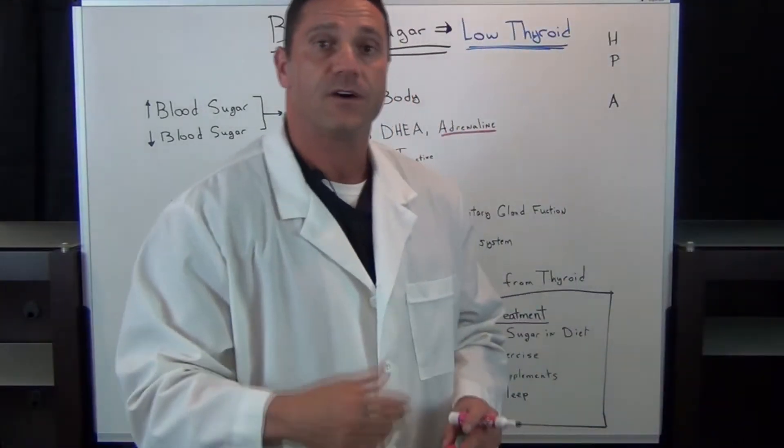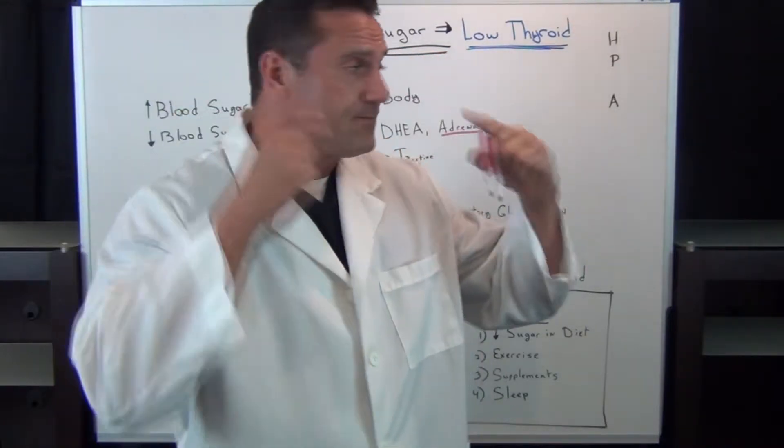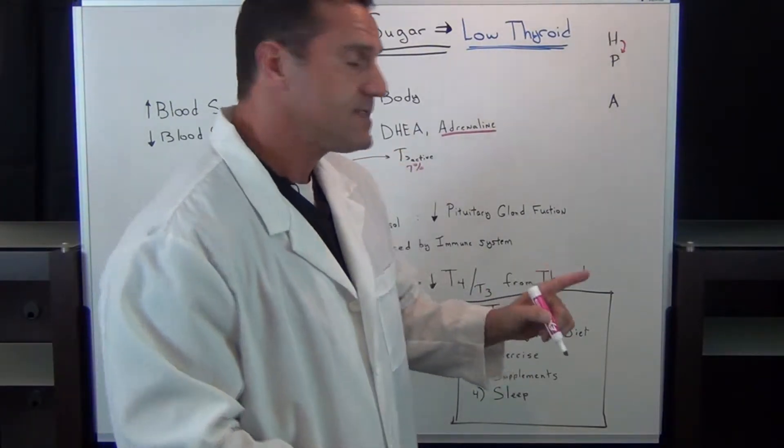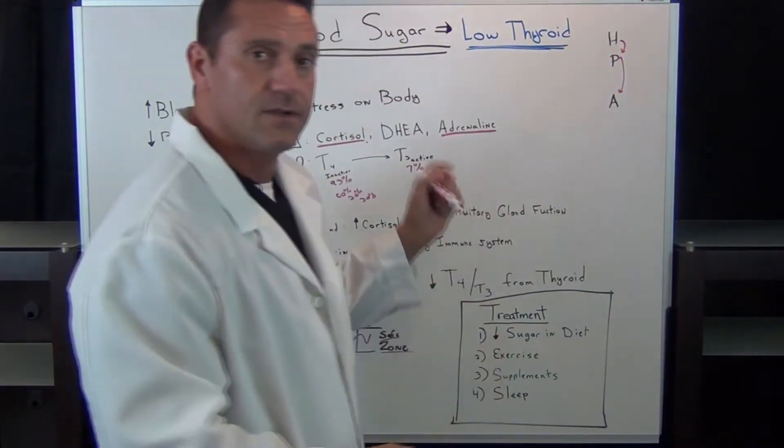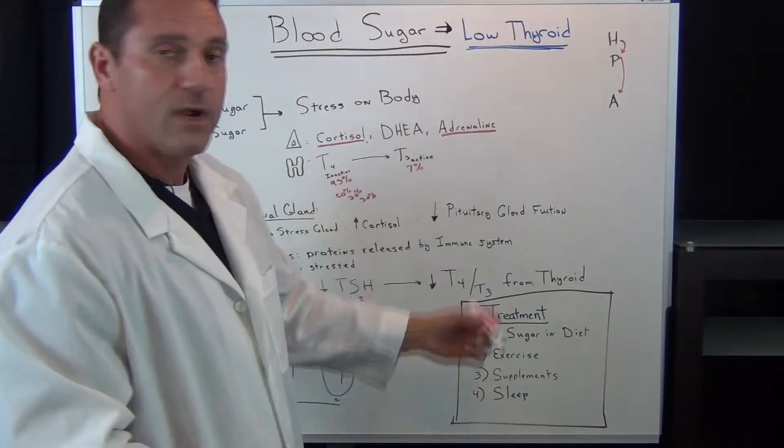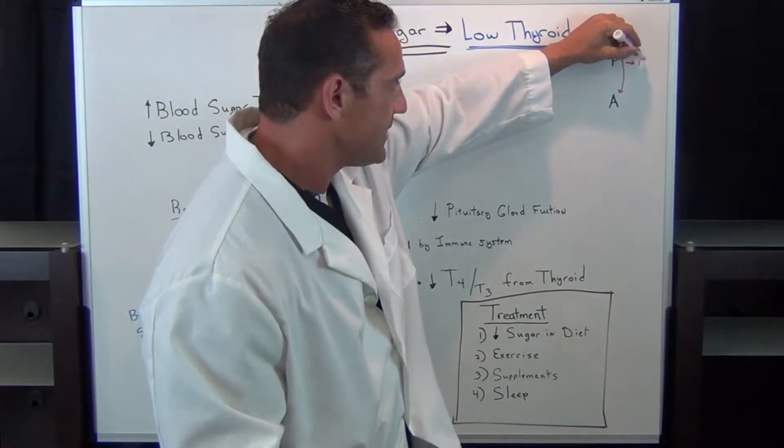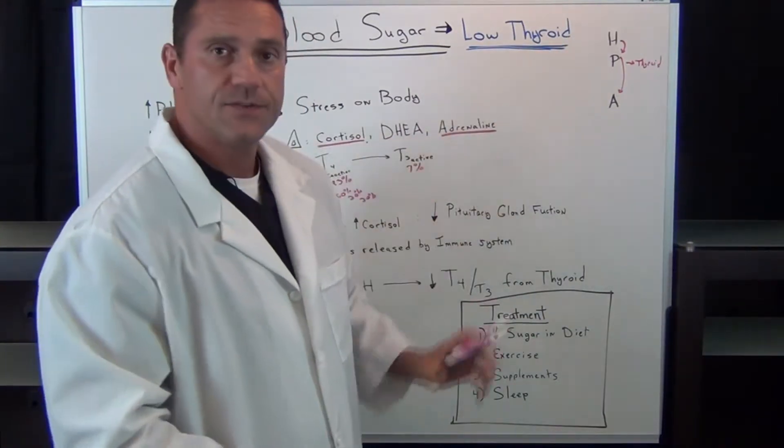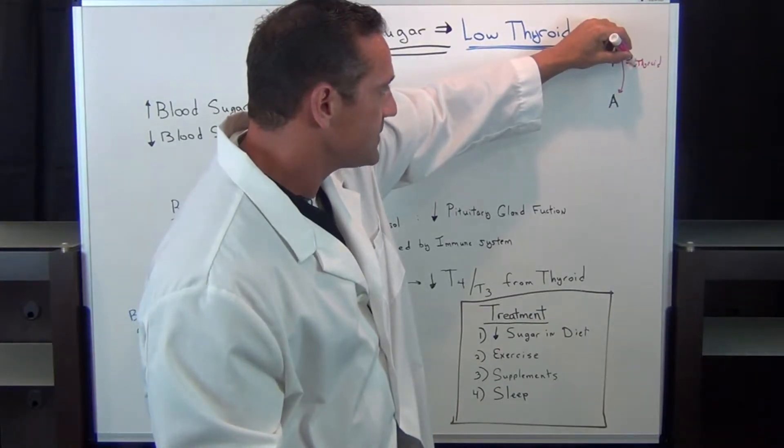We have a system, a feedback loop, called the HPA axis. In the hypothalamus, the master gland, that sends a signal down to the pituitary gland, which sends a signal to the adrenal glands to release cortisol, hormones, and adrenaline. When we are stressed out, and we have the thyroid gland on the side here, too much adrenal stress actually shuts down the function of the thyroid.